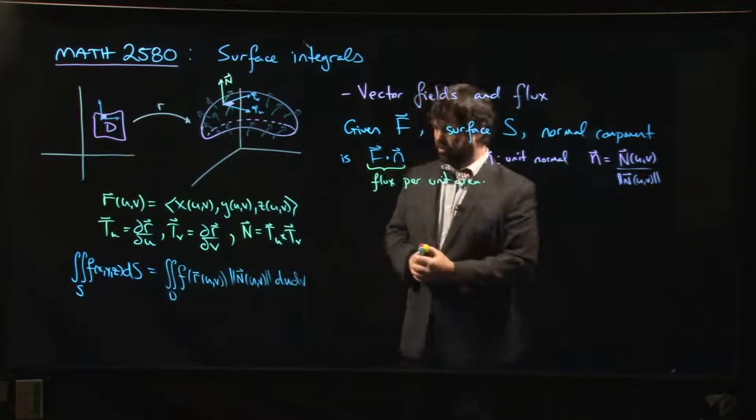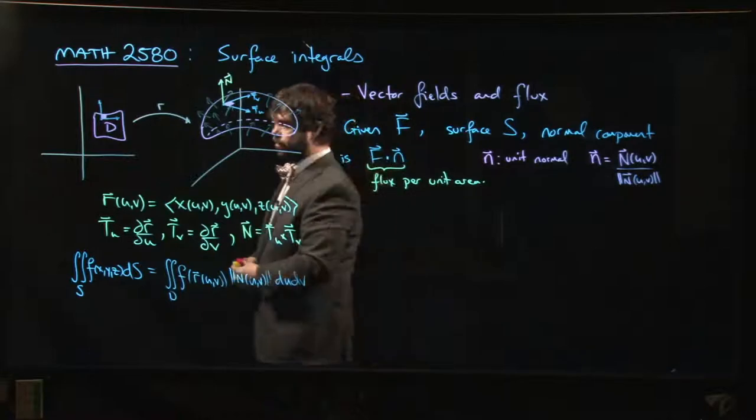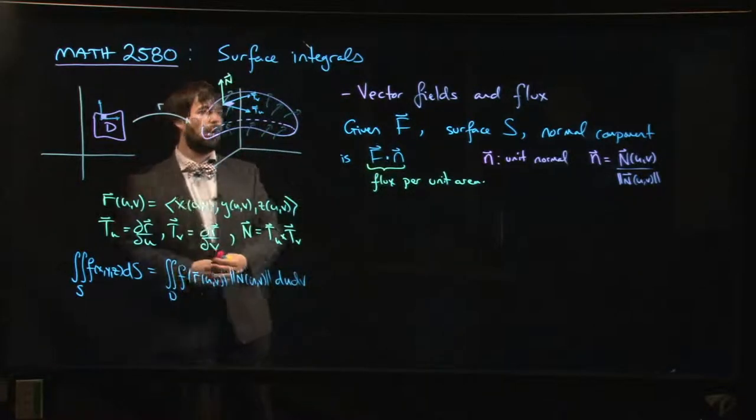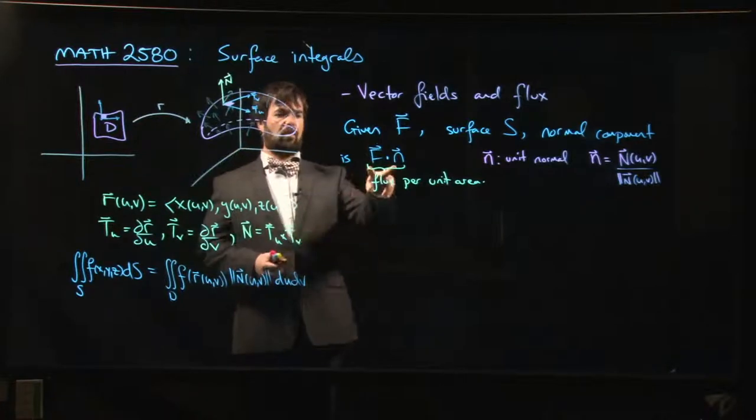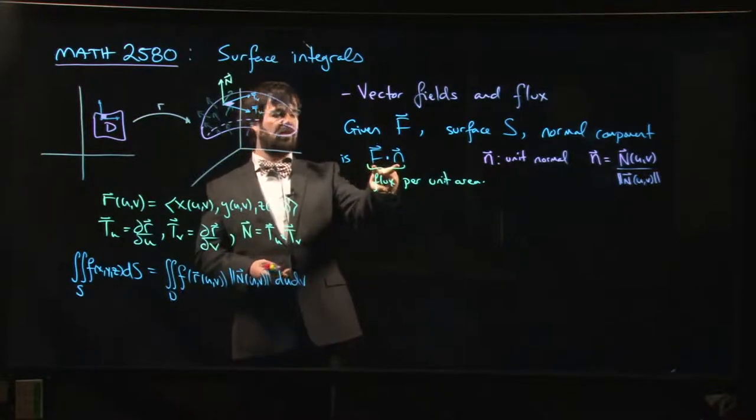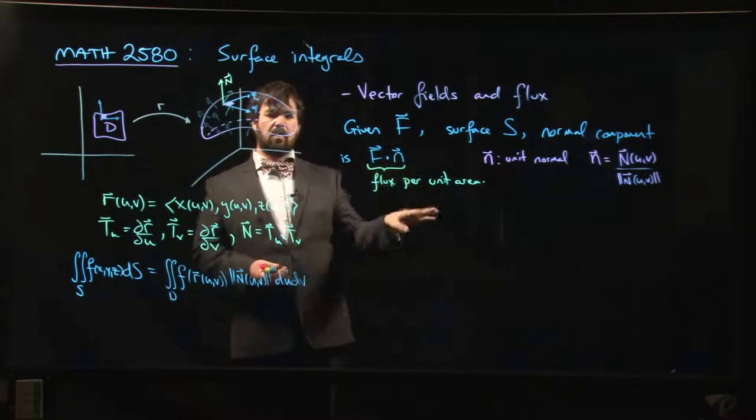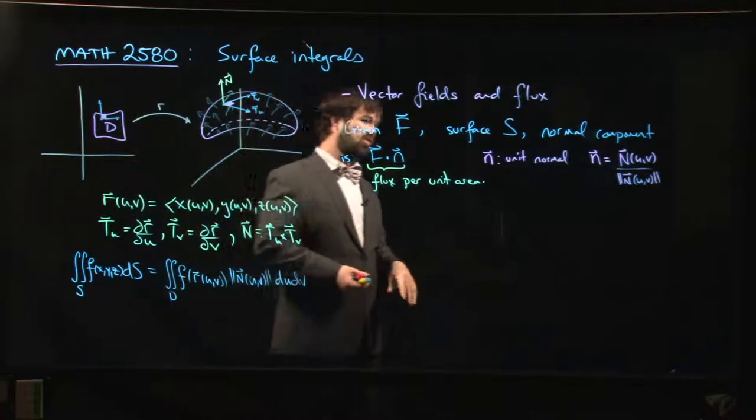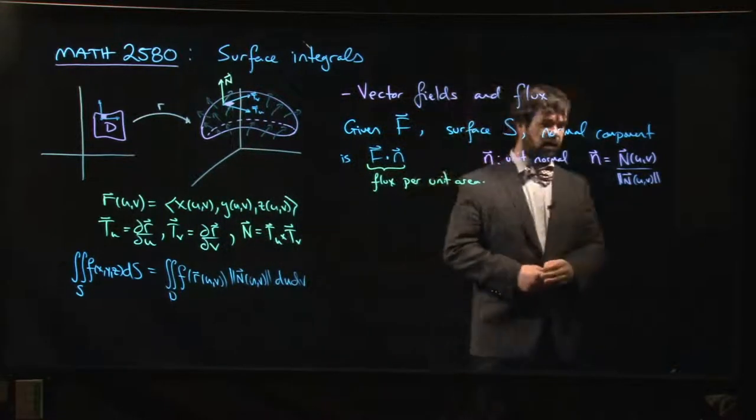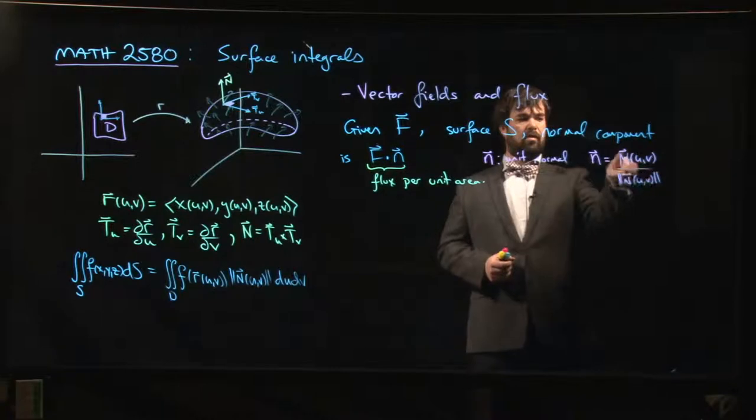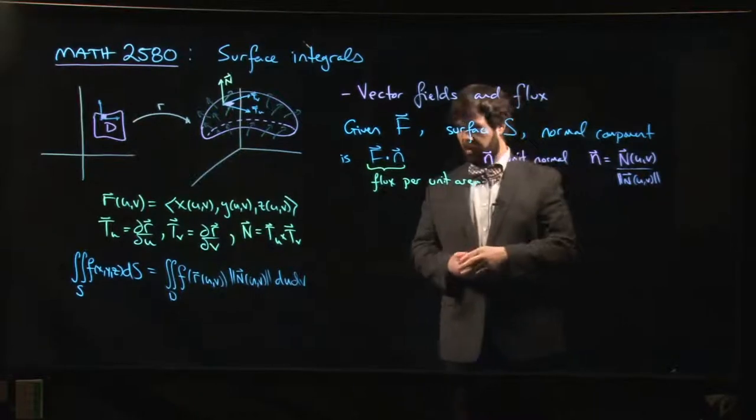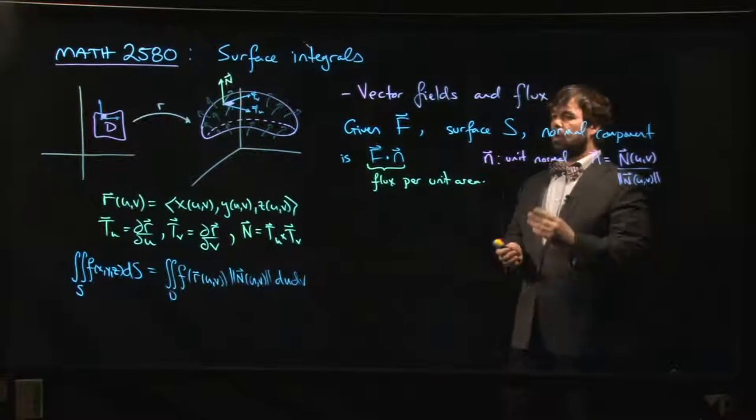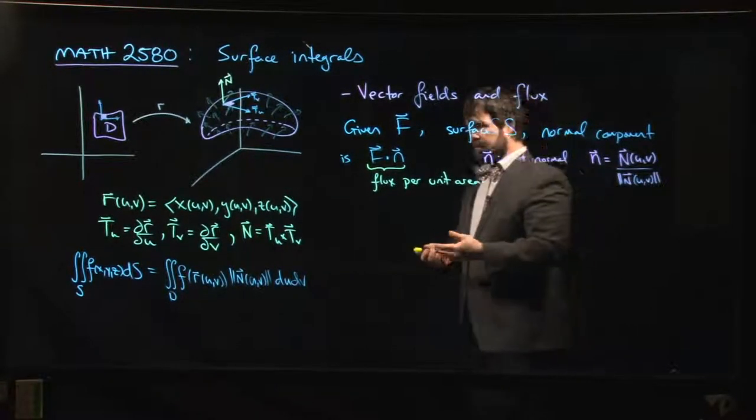There are two choices of unit normal depending on orientation. If you flip the unit normal, that's going to flip the sign and change your answer—your answer will be off by a negative if you change the orientation. This quantity doesn't quite depend on the parametrization as long as your choice respects the orientation.